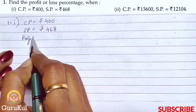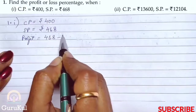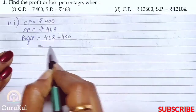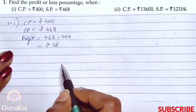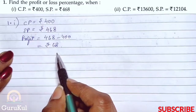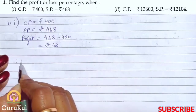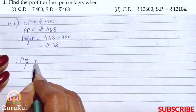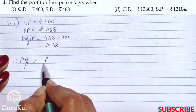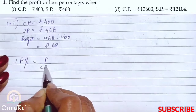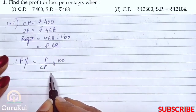So profit is equal to Rs. 468 minus Rs. 400, which is equal to Rs. 68. This is our profit. Now we need to find out the percentage. The formula is: profit percentage is equal to profit divided by cost price, into 100.